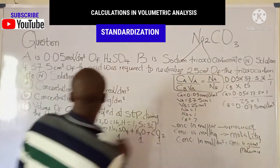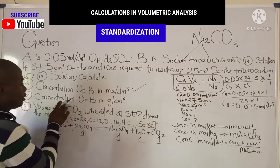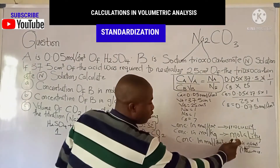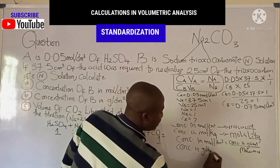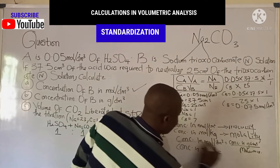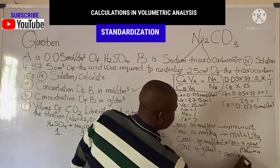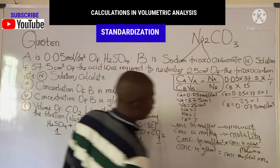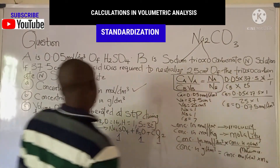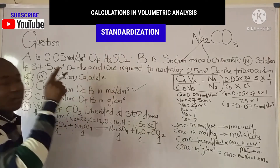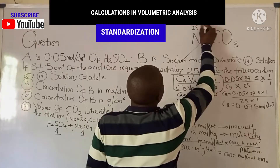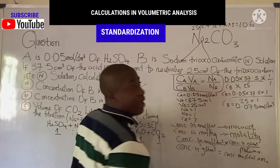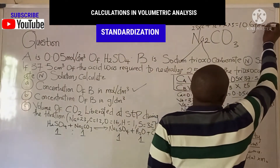The concentration of B in moles per dm³ is 0.075. Now to calculate the concentration in grams per dm³, we use: concentration in g/dm³ = concentration in mol/dm³ × molar mass. The molar mass of Na₂CO₃: sodium is 23 × 2 = 46, carbon is 12, oxygen is 16 × 3 = 48, giving a molar mass of 106 g/mol.